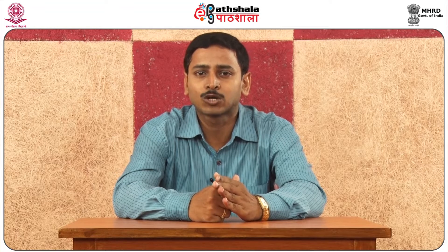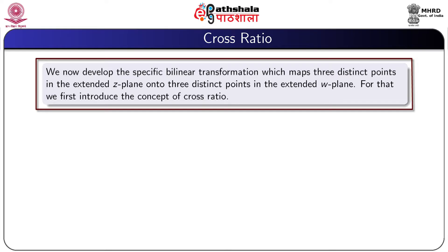We also show that if z1, z2, z3 are any three complex numbers in the extended z plane and w1, w2, w3 are three complex numbers in the extended w plane, then there exists a unique bilinear transformation W equal to F(z) such that F(zk) equal to wk for k equal to 1, 2, 3. Now we go to our presentation.